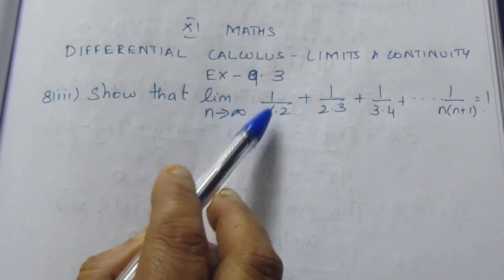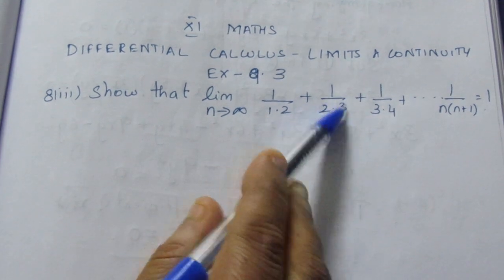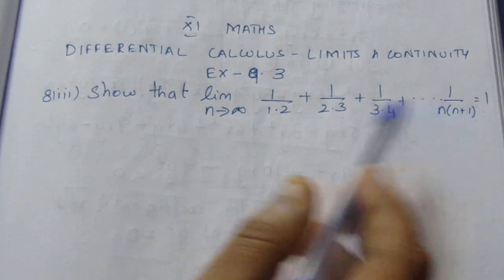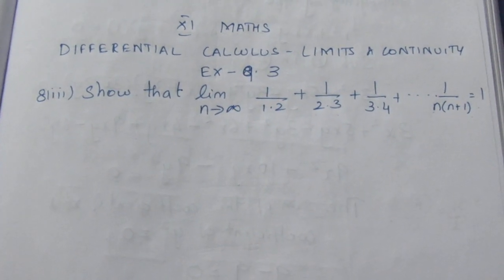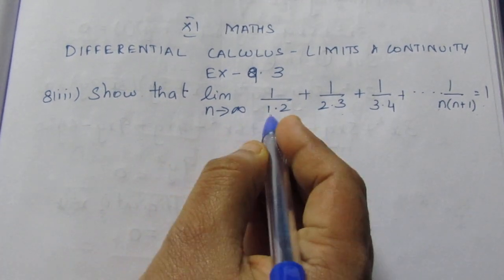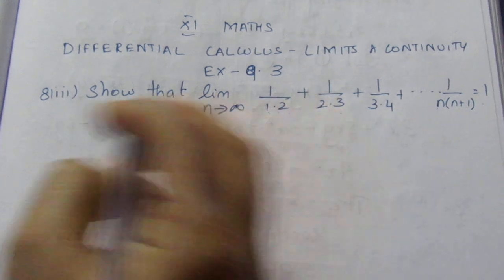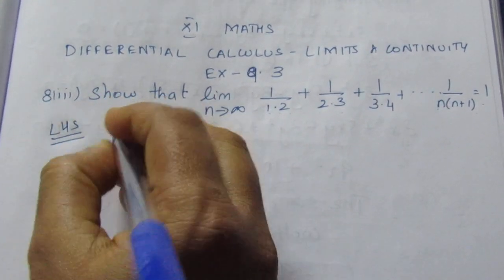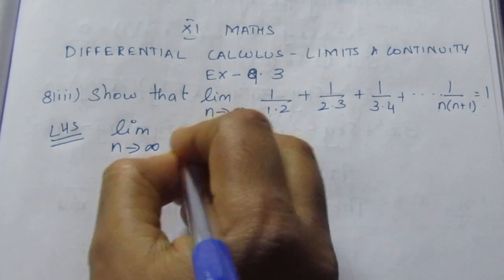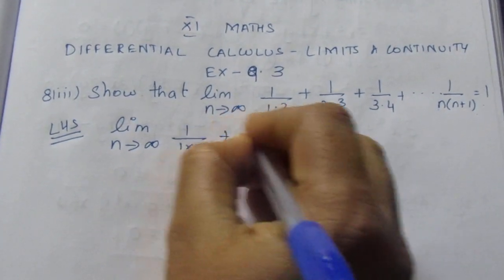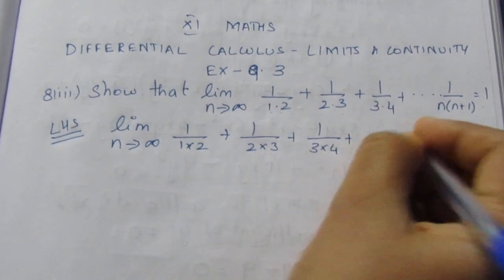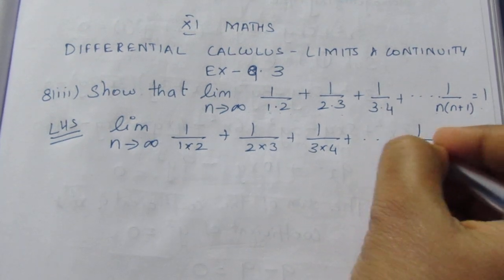If you look at this series, we can write it out. We need to prove that limit n tends to infinity of 1/(1×2) + 1/(2×3) + 1/(3×4) + ... up to 1/(n×(n+1)) equals 1.